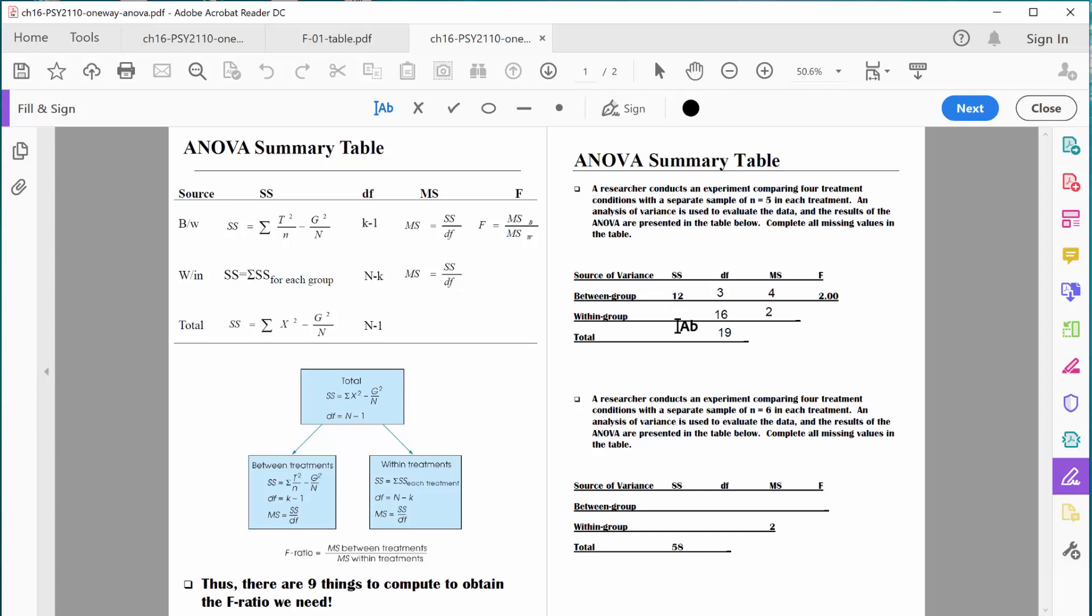So how can we find these remaining cells? Well, think about it this way. If sum of squares divided by degrees of freedom equals mean square, then mean square times degrees of freedom should equal sum of squares. And we can see it does in this case. Four times three equals twelve. So we should be able to take mean square times degrees of freedom within and find sum of squares within. Two times sixteen equals thirty-two.